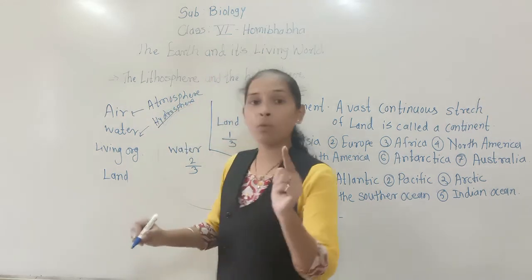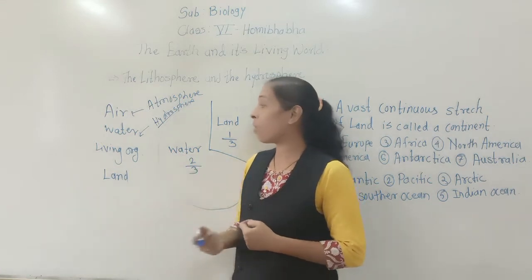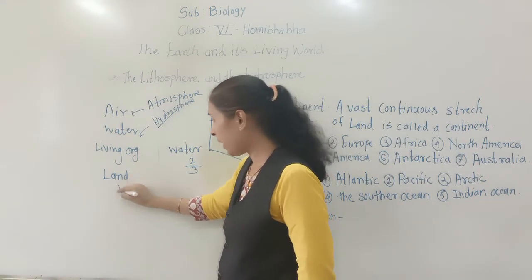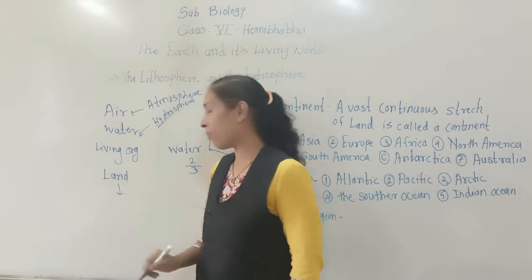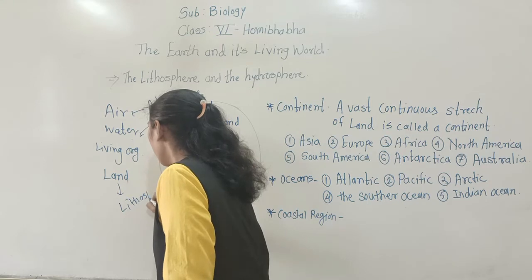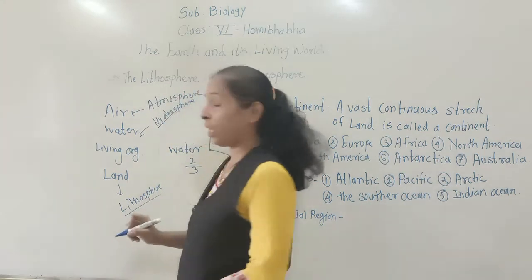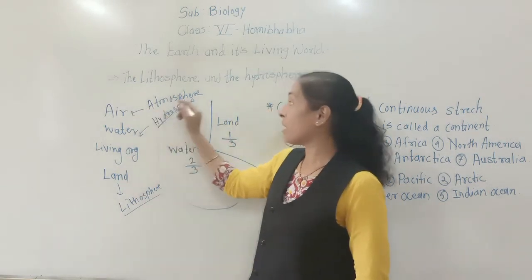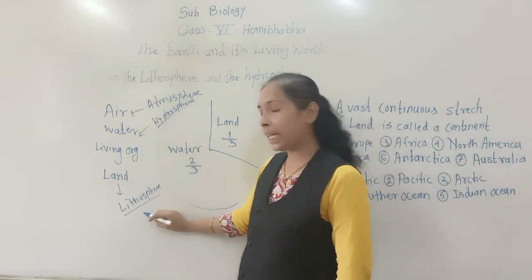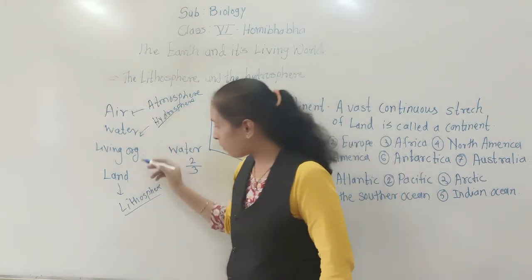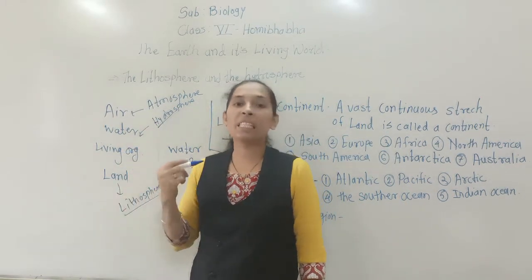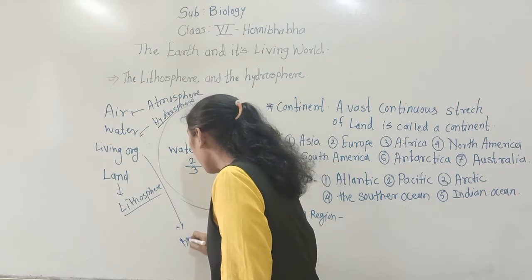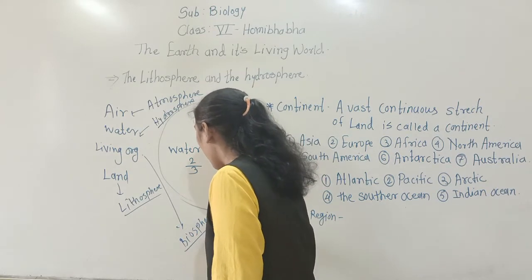If we talk about water, it is called the hydrosphere. 'Hydro' means water, so the surface or area of the earth covered with water is called the hydrosphere. For land, we use the term lithosphere. So: air means atmosphere, water means hydrosphere, land means lithosphere.